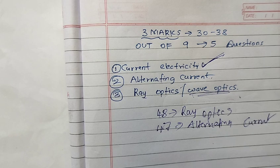A 20 ohm resistor, 1.5 H inductor and 35 microfarad capacitor are connected in series with a 220 volt, 50 Hz supply. Find the impedance of the circuit and also find the current through the circuit.